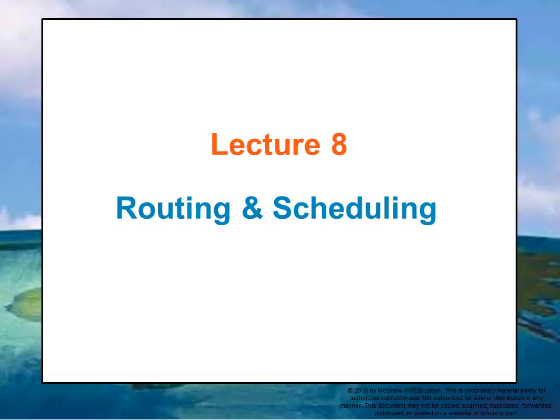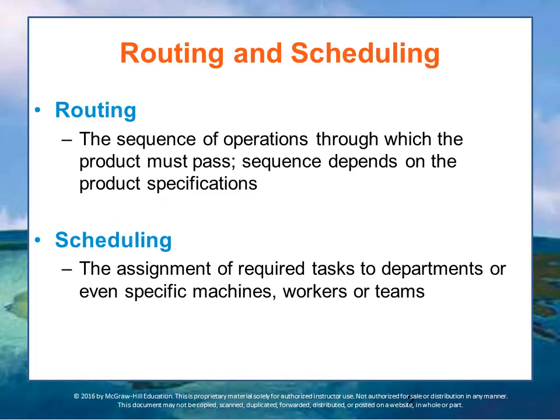Let's talk for a minute about routing and scheduling. After all the materials have been procured and what they're going to be used for is determined, managers can then consider the routing, or the sequence of operations through which the products must pass. The sequence depends upon the product specifications that were developed by the engineering department of the company.